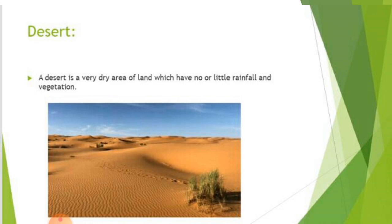Desert: a desert is a very dry, hot area of land which has no or little rainfall. There are many deserts in Pakistan: Kharan Desert, Thal Desert, Thar Desert, and Cholistan Desert. The Sahara Desert in Africa is the largest desert in the world.